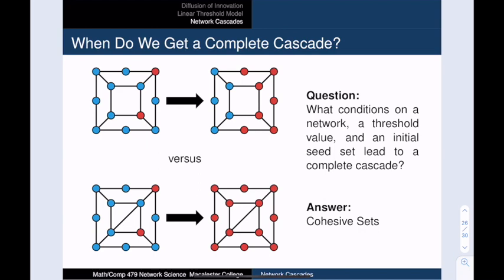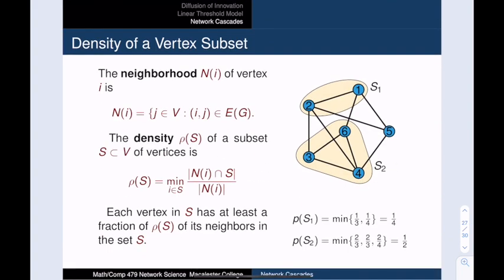So our new question becomes, what allowed us to get a complete cascade this time? Or equivalently, what prevented a complete cascade in the graph missing the UV edge? The answer lies in something called cohesive sets. A cohesive set is a subnetwork that is too insular for the innovation process to penetrate. Before we can define a cohesive set, we must talk about the density of a subset of vertices. So given a subset S, we look at each vertex in S and count the fraction of its neighbors that are in the set. In other words, we want to know the fraction of inward-facing edges. The density of S is the smallest fraction that we calculate among all the vertices in S. For example, in this network, the set S1 has density one fourth. This is because vertex 1 has density one third, while vertex 2 has density one fourth, and the density of S1 is the smaller of these two numbers. Using a similar calculation, we find that the density of S2 is one half.